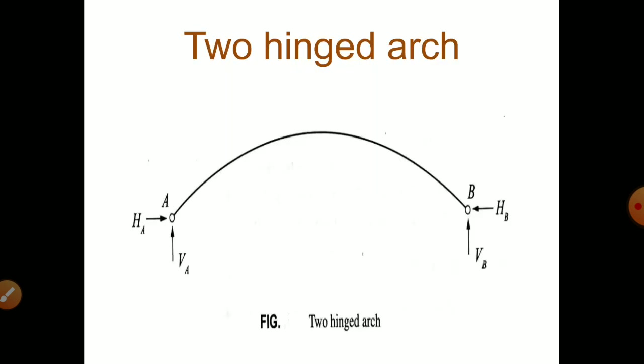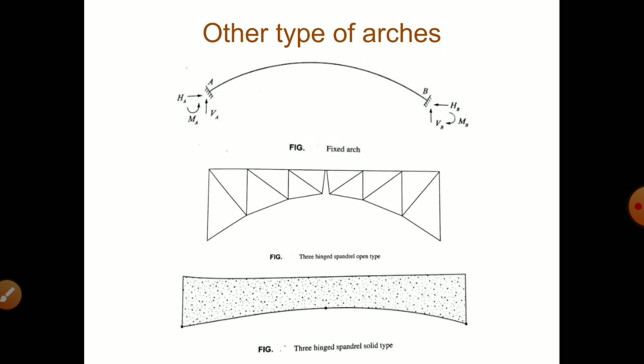In case of two-hinged arch, if you see, there will be four unknowns, two horizontal and vertical reactions at each support. There will be totally four unknowns. In case of other types of arch also, the number of unknowns will be more. Hence, statically indeterminate.